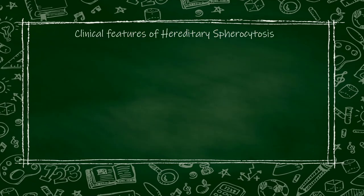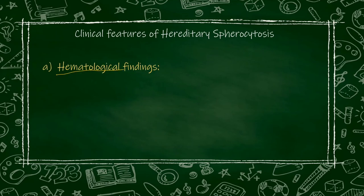The clinical features of hereditary spherocytosis — what a doctor would see on examination: first, blood findings, also called hematological findings. In exams, these should be written in a particular sequence — since this is a blood disease, write blood findings first, then bone marrow findings.